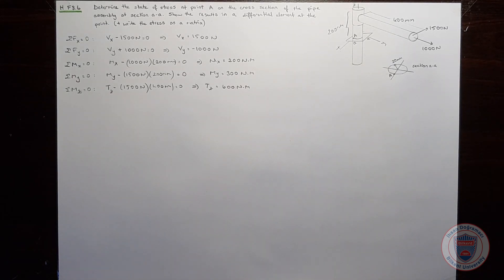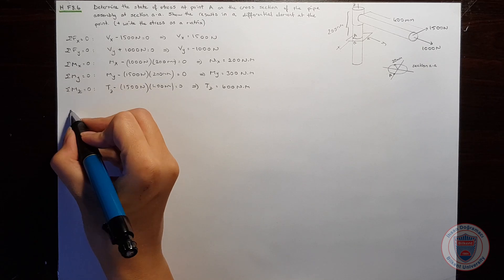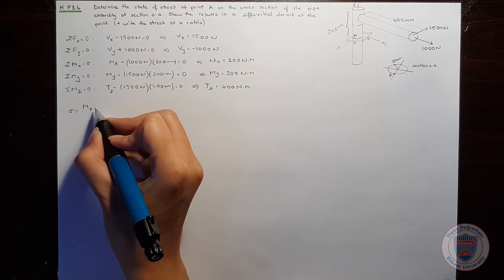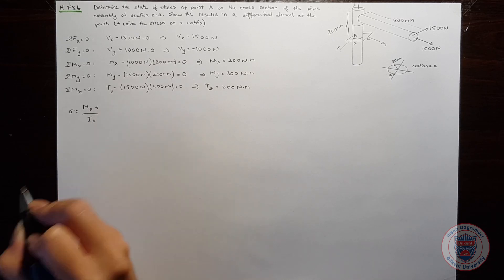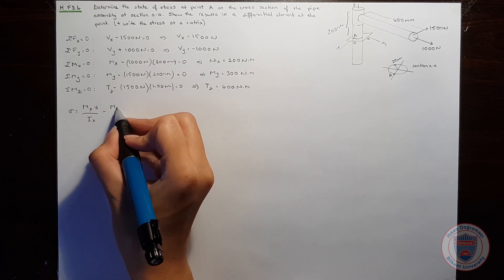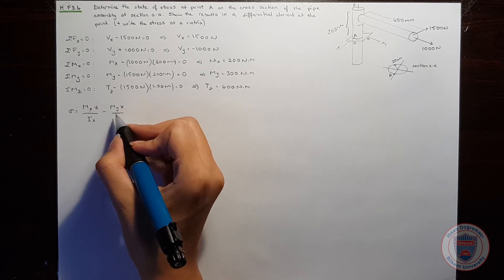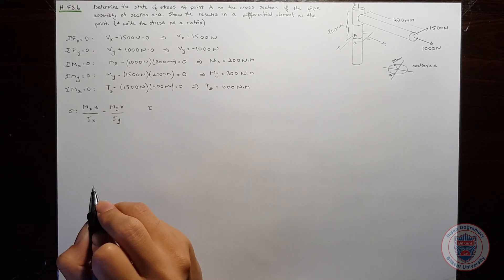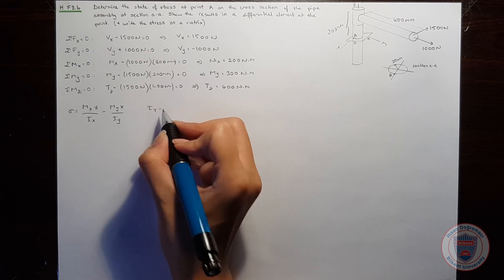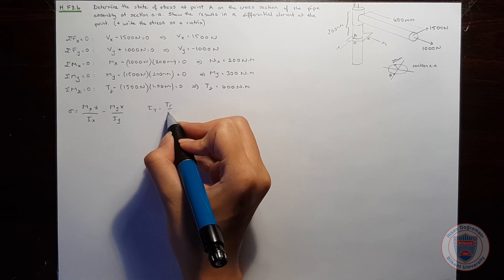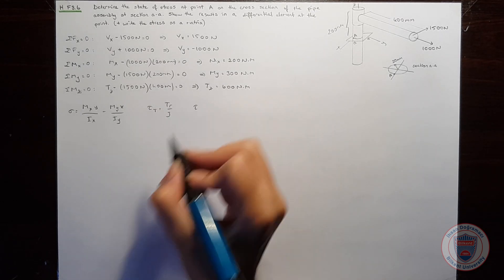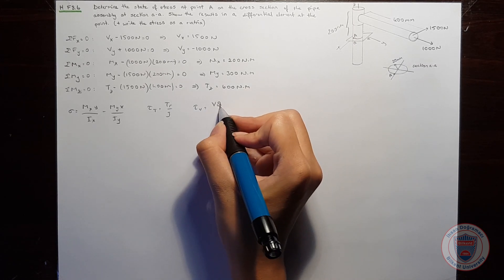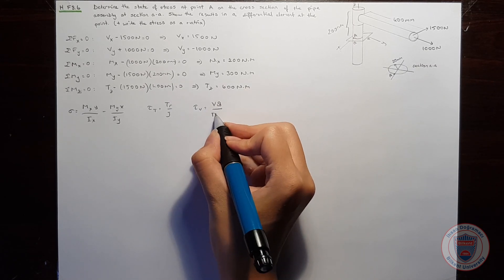Since we observe unsymmetric bending, the normal stress will be equal to Mx times y over Ix minus My times x over Iy. The shear stress caused by the torque will be equal to T times r over the polar moment of inertia. And the shear stress caused by shear will be equal to V times Q over I times t.